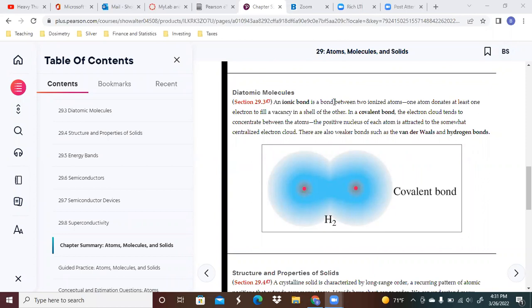The summary here is going to focus on ionic bonds, which are bonds between two ionized atoms. One atom donates at least one electron to fill a vacancy in the shell of the other.